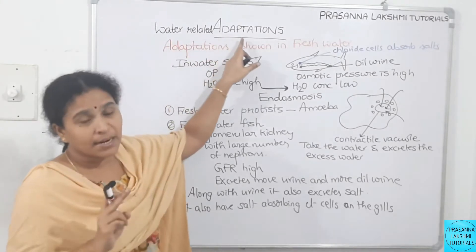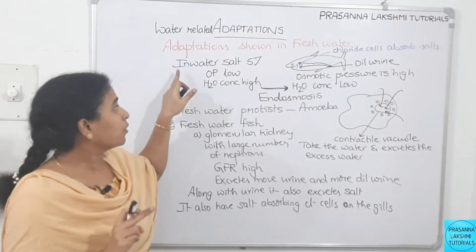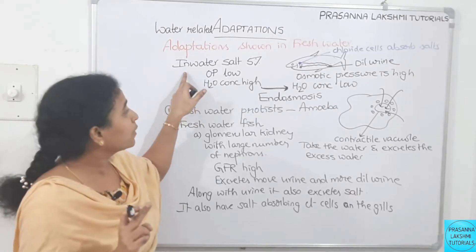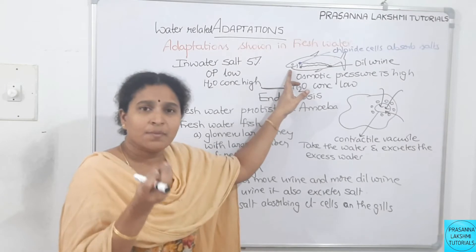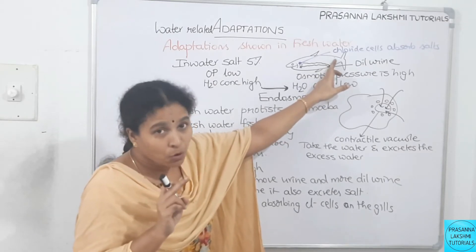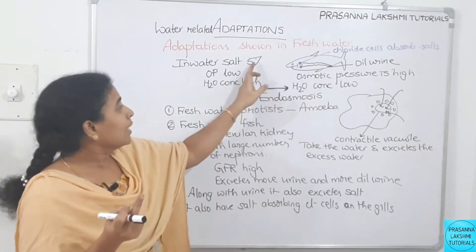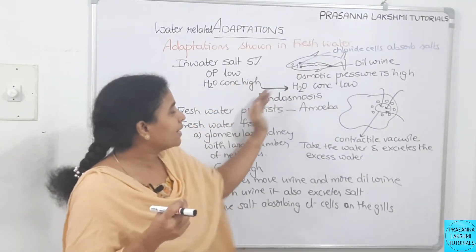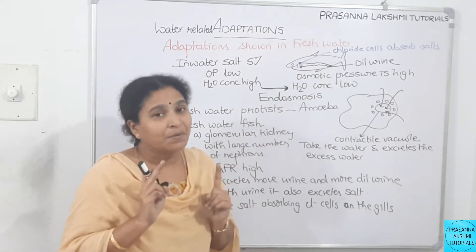To summarize the freshwater scenario: the salt concentration in freshwater is 0 to 5%, while inside the organism it is around 10 to 15%. This means solute concentration is higher inside the organism and water concentration is higher in the environment. Water therefore enters the body — a process called endosmosis — and the organism must have adaptations to tackle this.